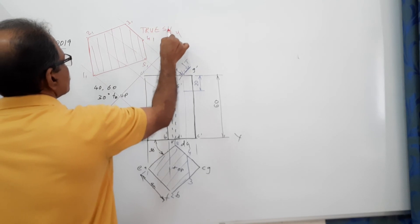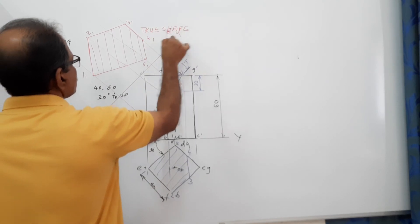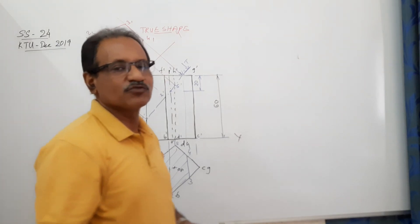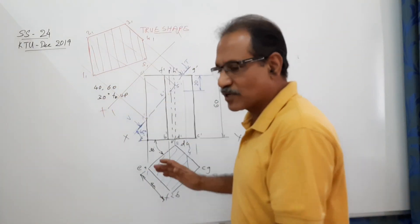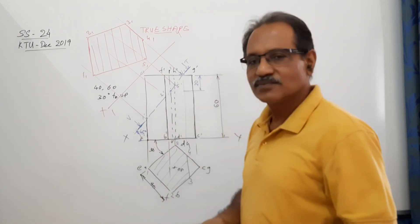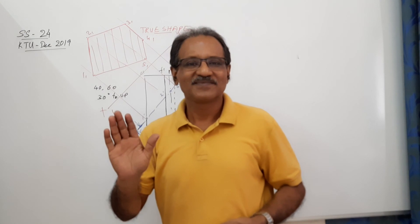Hatch at 45 degrees to the XY line, X1Y1. This is the true shape. This is a comparatively simple question because it's a square prism with very few vertical edges, very few points when it is cutting. Comparatively simple question. Okay, thank you.